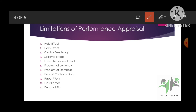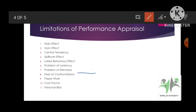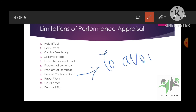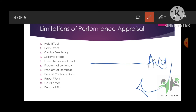Next is problem of leniency — lenient hoke meinhe sabhi ko high scores de diye. On the contrary, problem of strictness means strict hoke meinhe sabko low scores diye. Then fear of confrontations — confrontations means arguments. So to avoid arguments, the rater gives a below-average performer higher scores than deserved — this is one limitation.